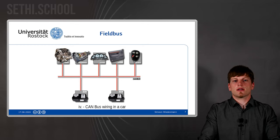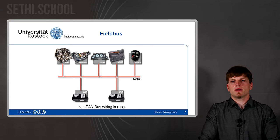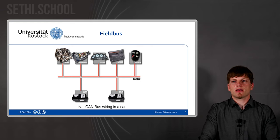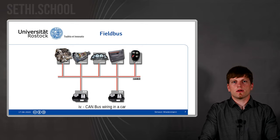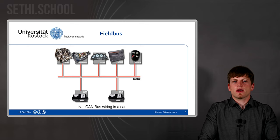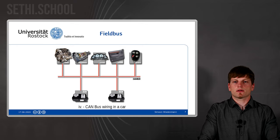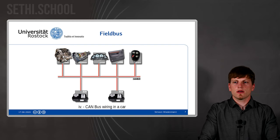The CAN bus is the most prominent bus in cars. It has real-time capabilities. It has the option to control brakes, for example, or the anti-blockage system, the engine, and all that kind of stuff. And there are different flavors of the CAN bus as well, and add-ons and all those kinds of things.